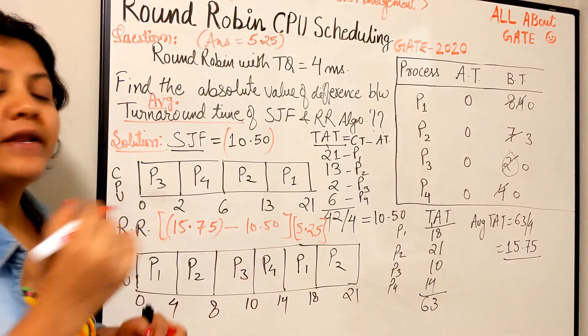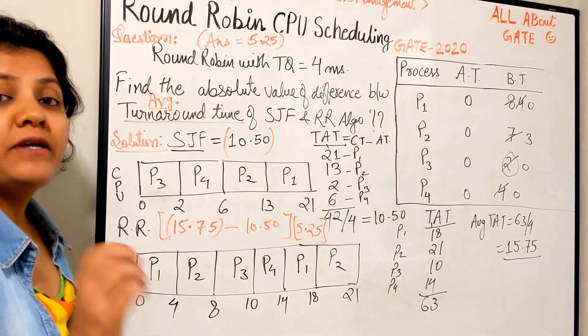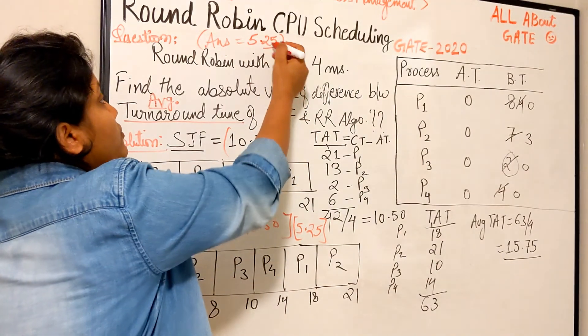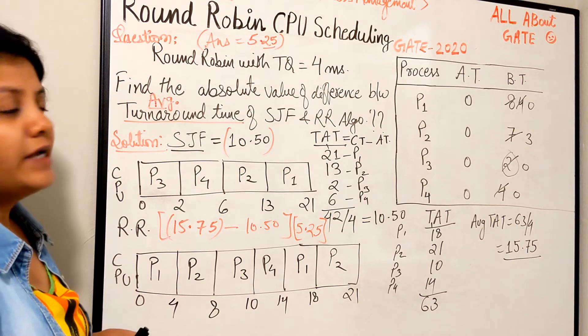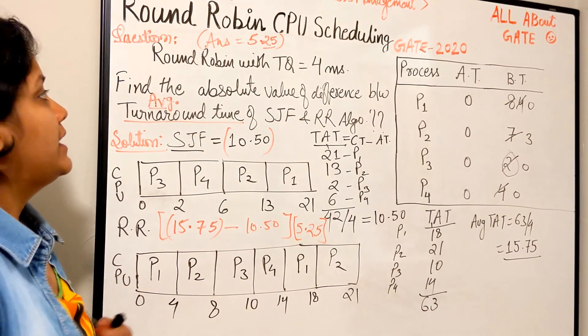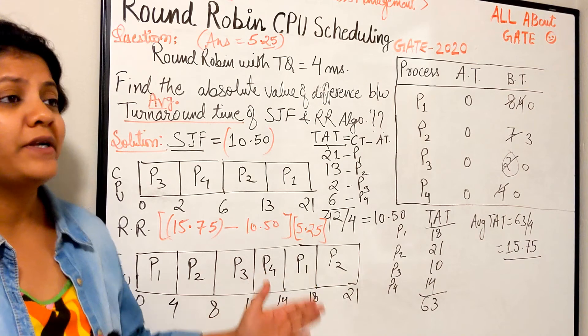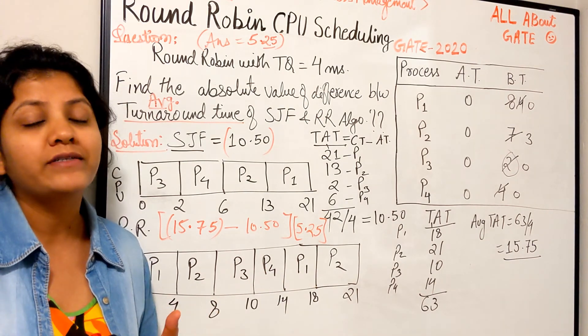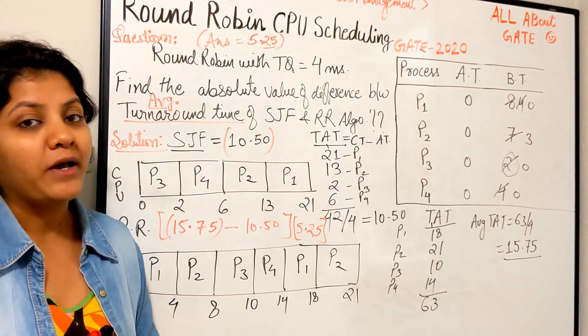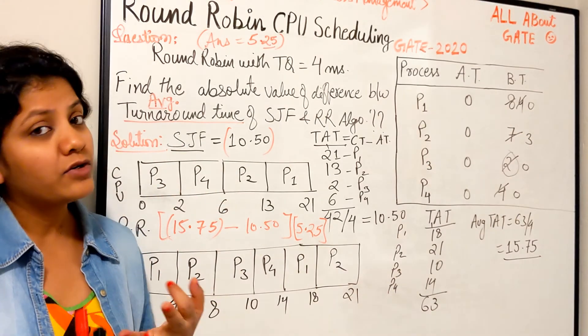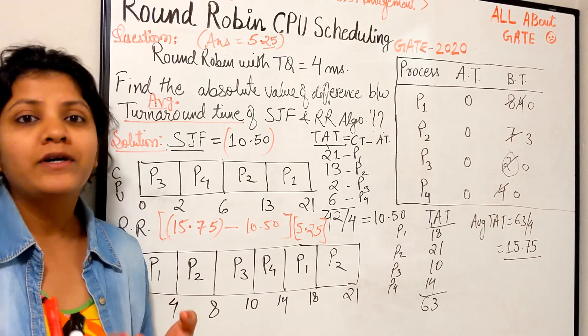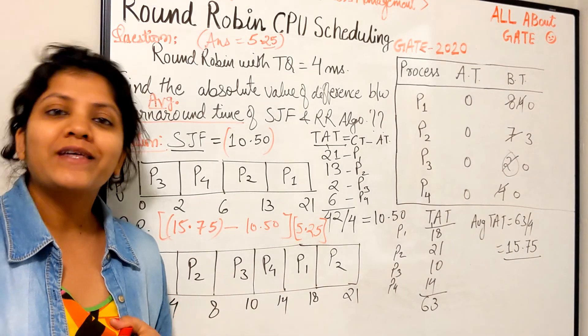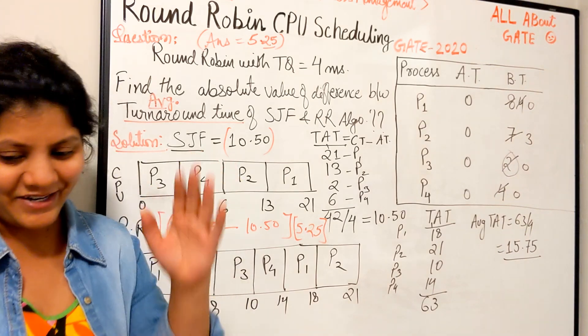Mind it, because it's a numerical based question, they've already mentioned round up to two decimals, so you have to use two decimal values. The absolute difference is the answer. Solving these questions is practicing all the algorithms one by one. We just practiced SJF, Round Robin, turnaround, and average turnaround. We'll see you again very soon in the next video. Till then, bye bye, take care.